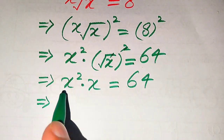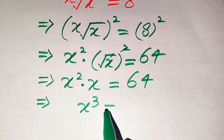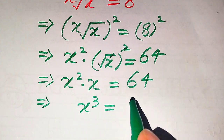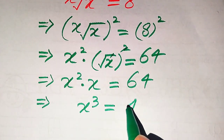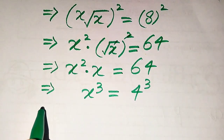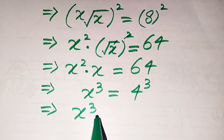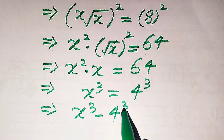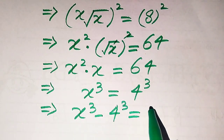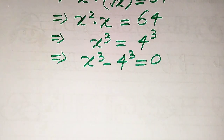We know that x squared times x is equals to x cubed. We also know that 64 is equals to 4 cubed. Now we move 4 cubed to the left hand side, so it becomes x cubed minus 4 cubed, and this whole equation is equals to 0.